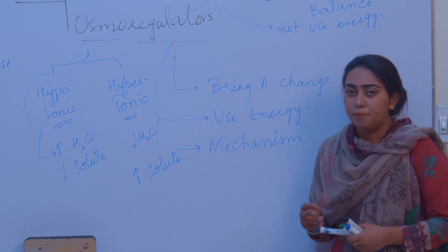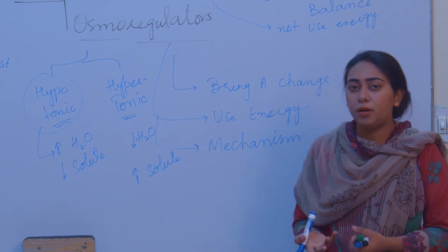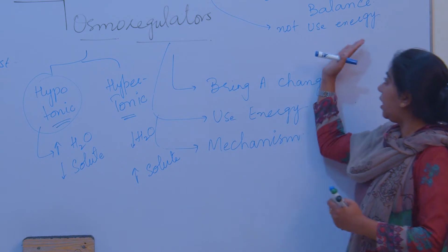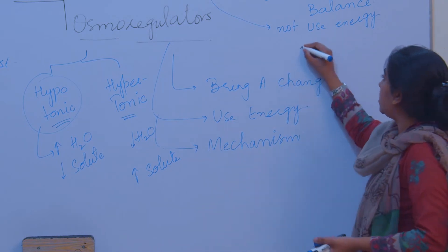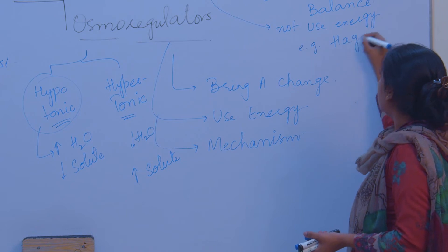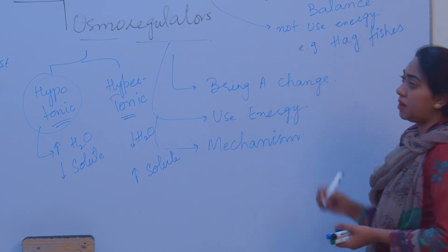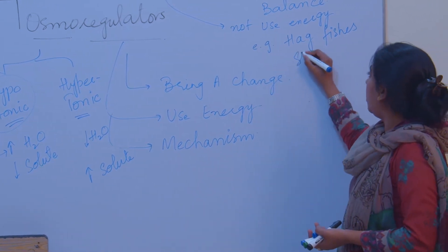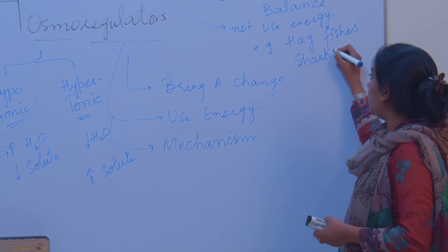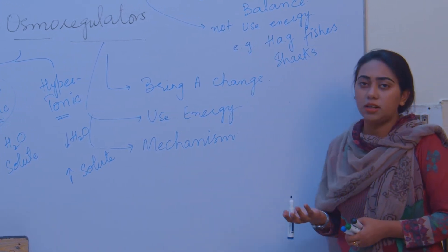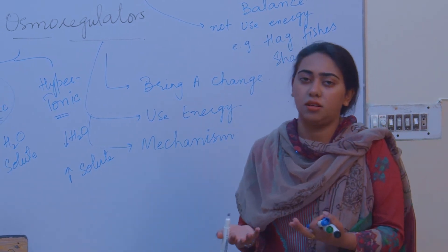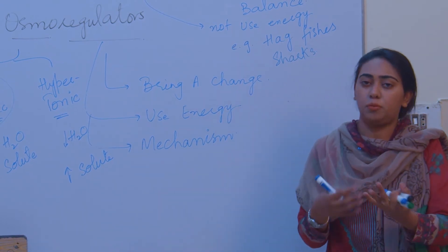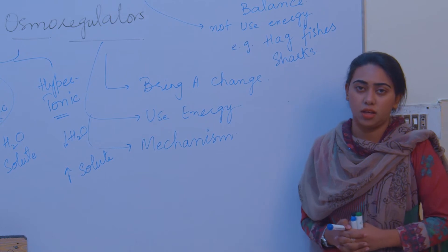Examples of osmoconformers include hagfishes, which belong to class Agnatha (covered in chapter 9), and elasmobranchs such as sharks. Osmoregulators include humans and most terrestrial vertebrates, as well as amoeba, protozoans, and protists — all of these are osmoregulators.